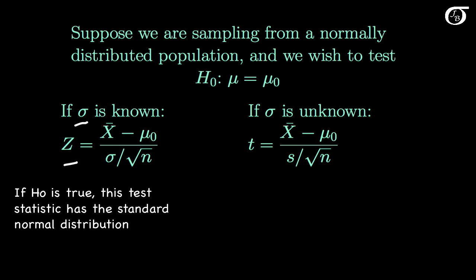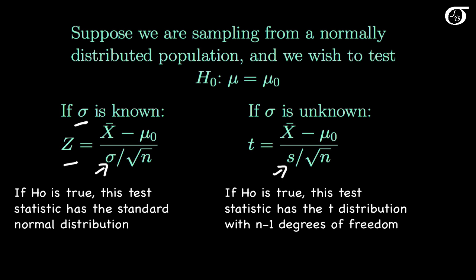But in the real world it would be very rare that we would know the value of sigma. And so we replace the value of sigma, the population standard deviation, with our sample standard deviation. We get a very similar test statistic, but something fundamental has changed in the underlying mathematics. This t-statistic does not have the standard normal distribution. If the null hypothesis is true, this test statistic will have a t-distribution with n-1 degrees of freedom.